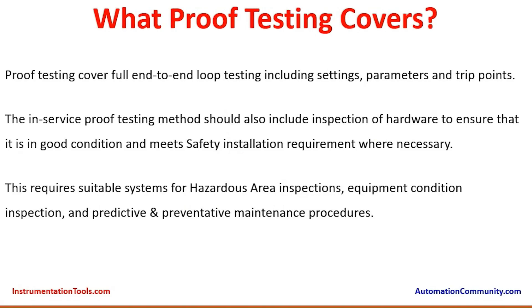What does proof testing cover? Proof testing covers full end-to-end loop testing including settings, parameters, and trip points. In the proof testing, the internal settings of the sensor electronics and parameters — such as constants and damping settings for some instruments — have to be re-verified as per the design conditions. The trip points in the logic solver will be re-checked, because during plant commissioning there is a set value configured for tripping, but during operation there could be reasons to slightly adjust the set points, which must be kept within limits and updated in the records.